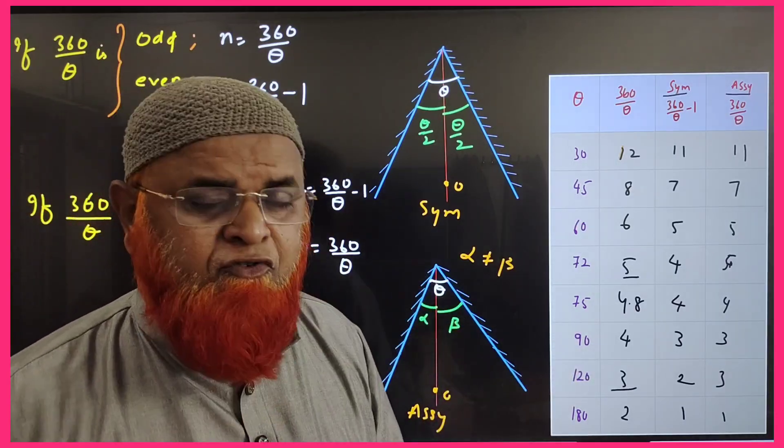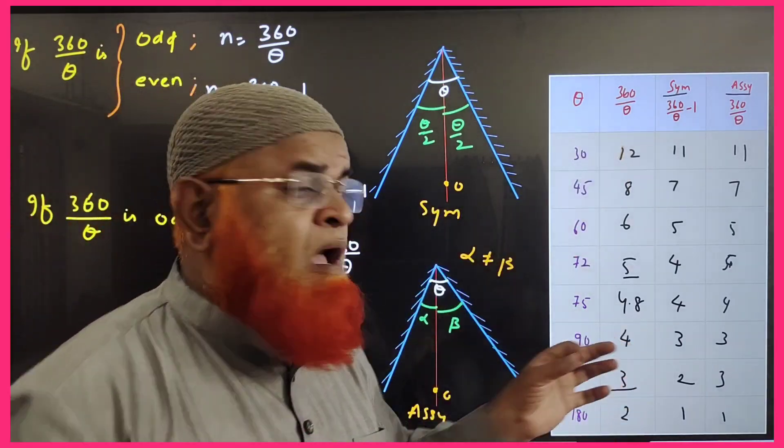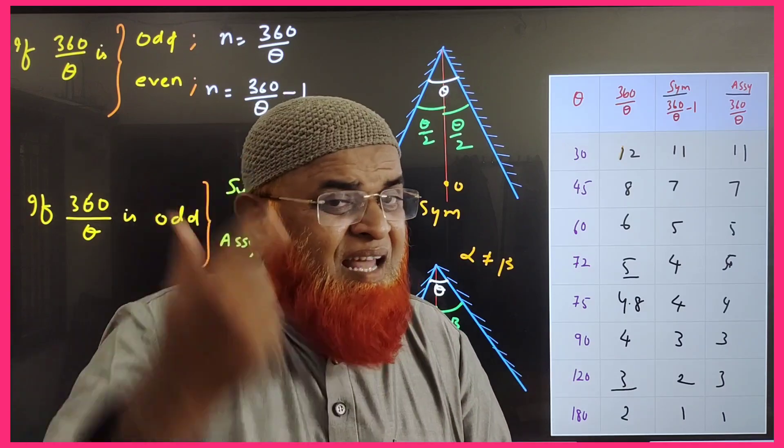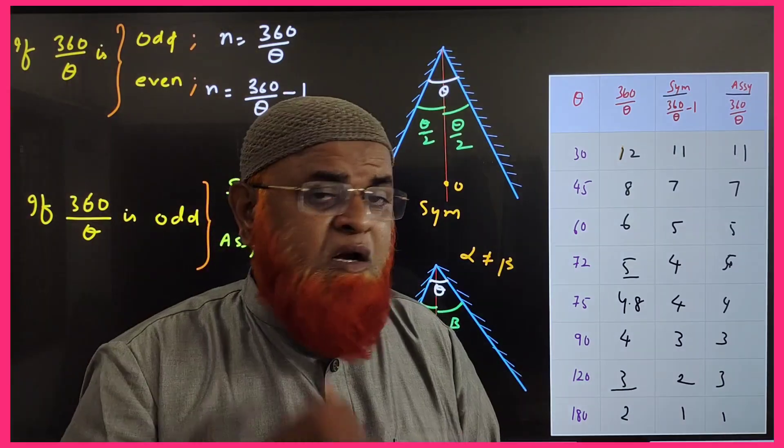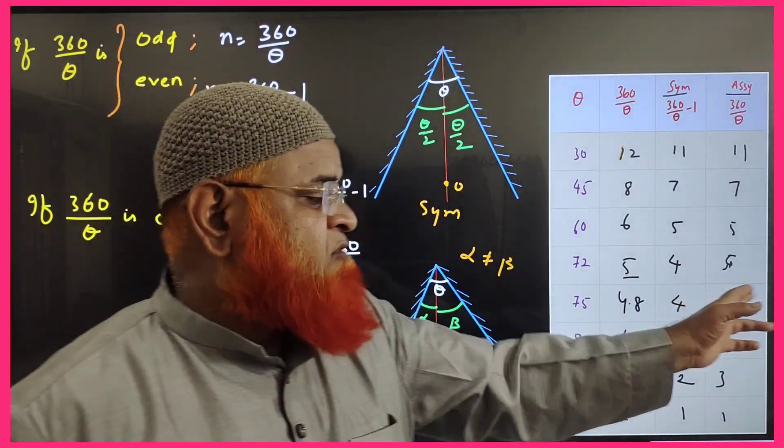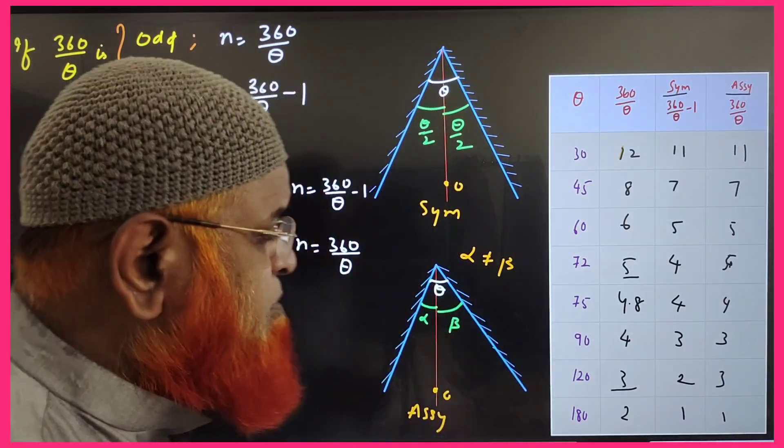The special case here is 75, where when you divide 360 by 75, you will be getting 4.8, which is less than 5. So the fifth image you are not going to see. You will directly write 4 and 4.